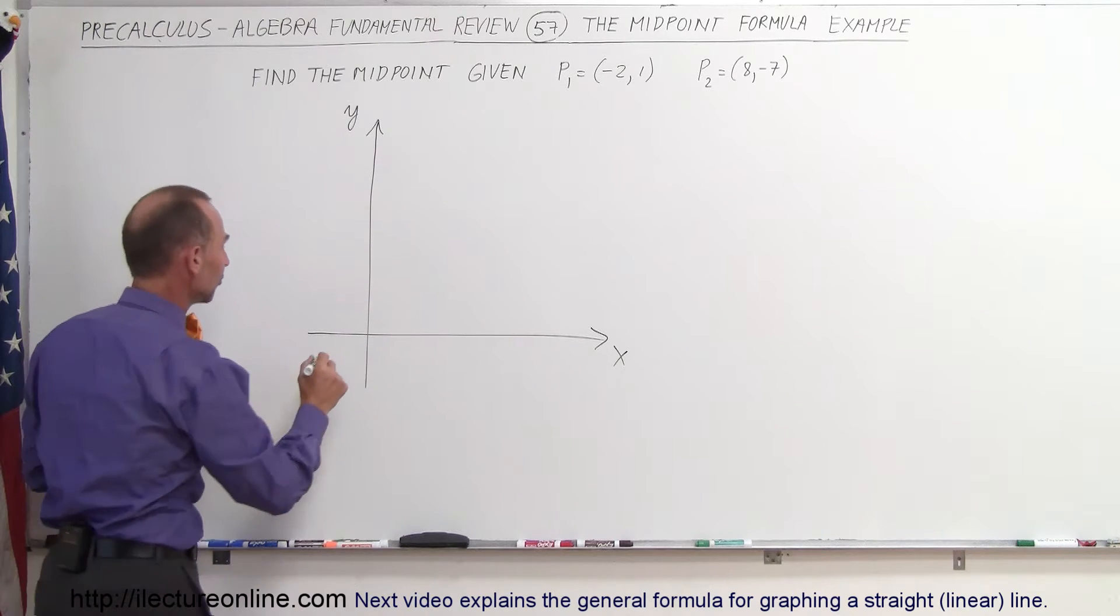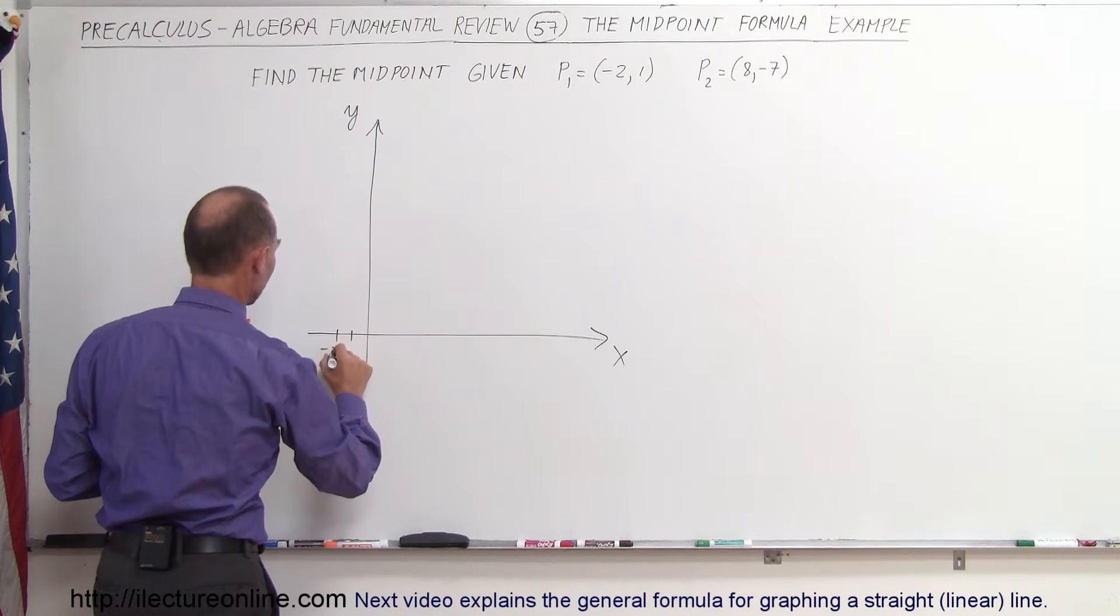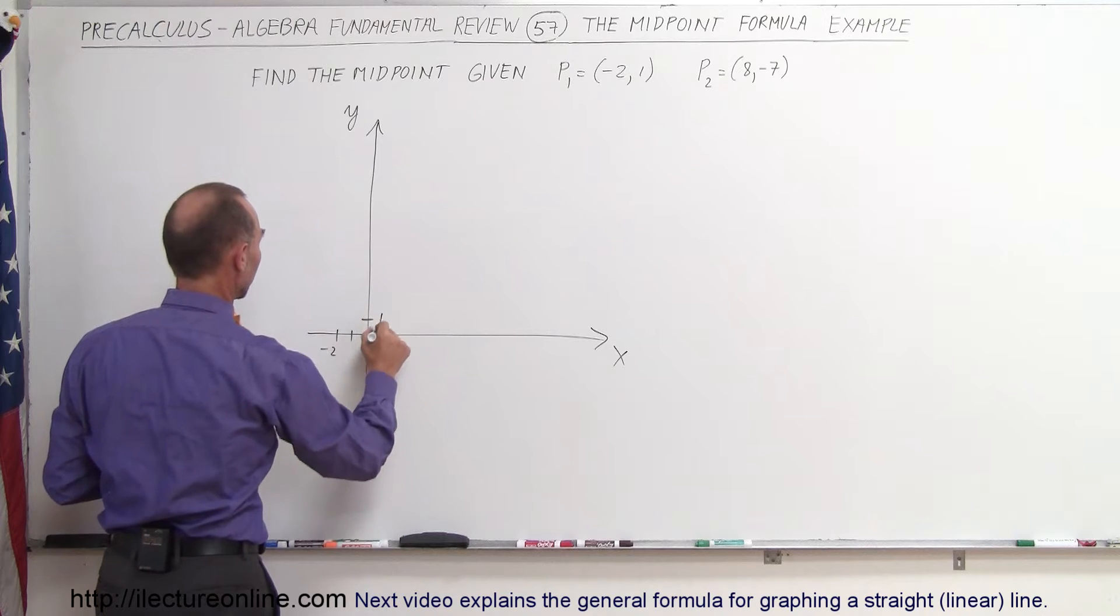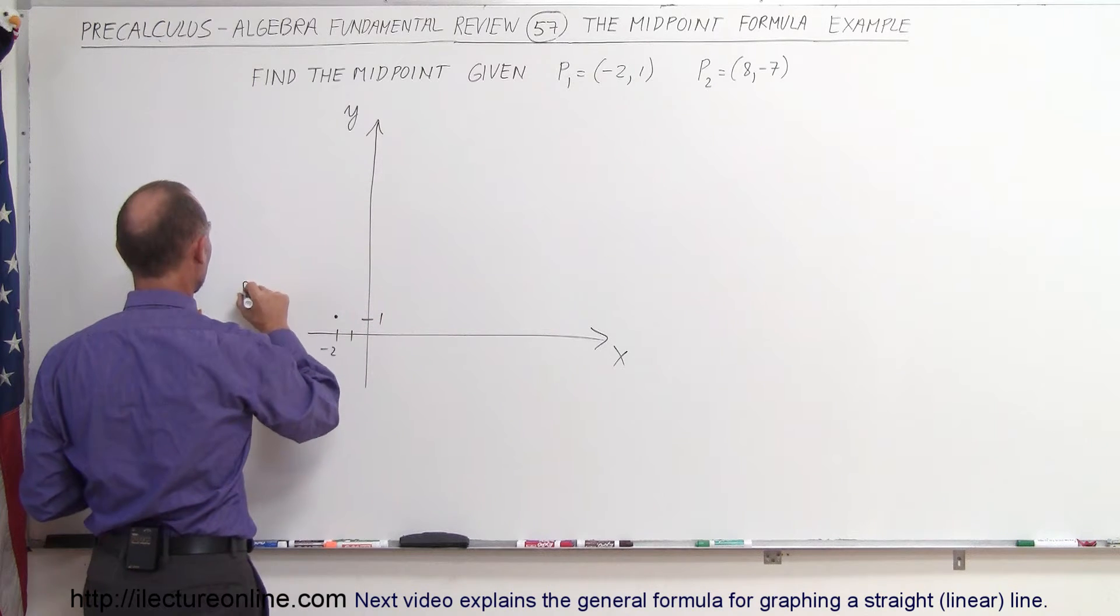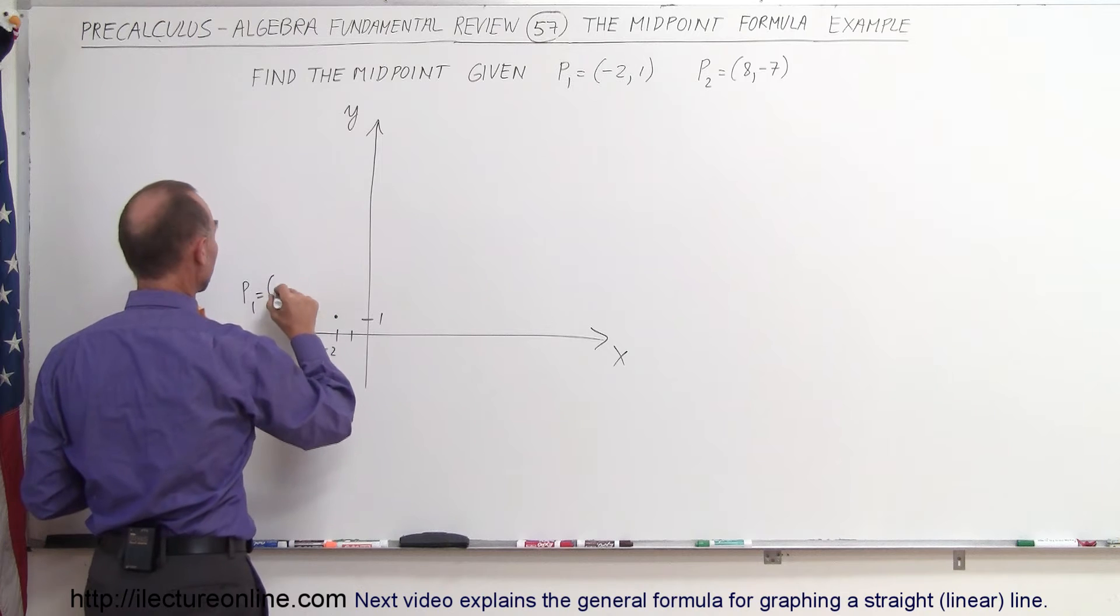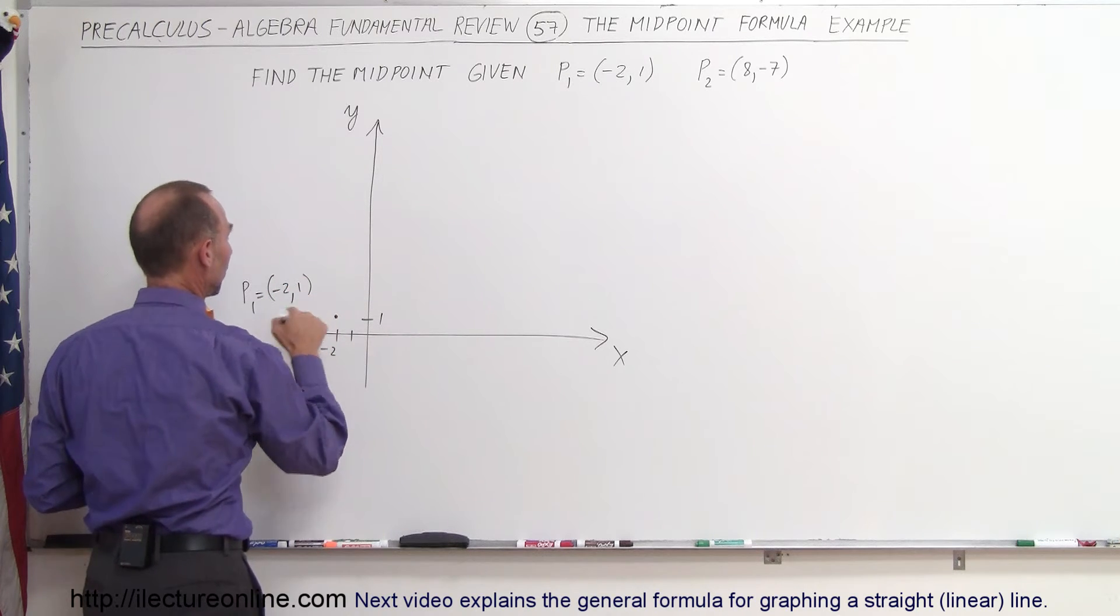We have x equals negative 2, that's 1, 2, negative 2, and y equals 1 right there. So that's my first point, call it point 1, and that is equal to the value (-2, 1). That's the point right there.